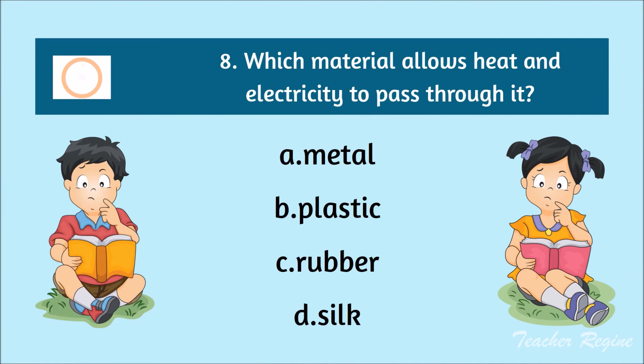Number 8. Which material allows heat and electricity to pass through? A. Metal, B. Plastic, C. Rubber, D. Silk. The correct answer is letter A. Metal.